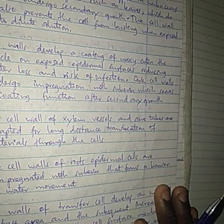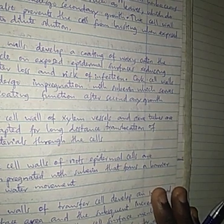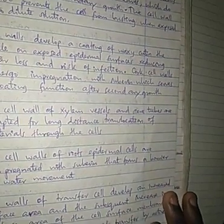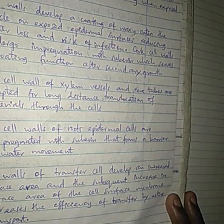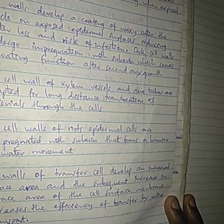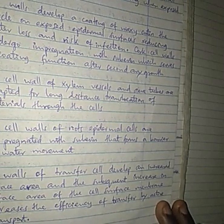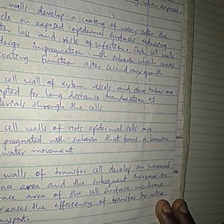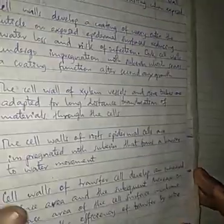The cell wall of root epidermal cells is impregnated with suberin, forming a barrier to outward movement. The cell wall of transfer cells develops increased surface area, and the subsequent increase in surface area of the cell surface membrane increases the efficiency of transfer and active transport.